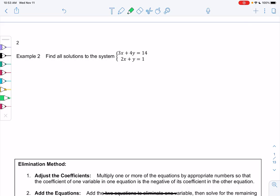So in example 2, we want to find all solutions to the system. 3x plus 4y equals 14. And 2x plus y equals 1. So I have to solve for x or y.